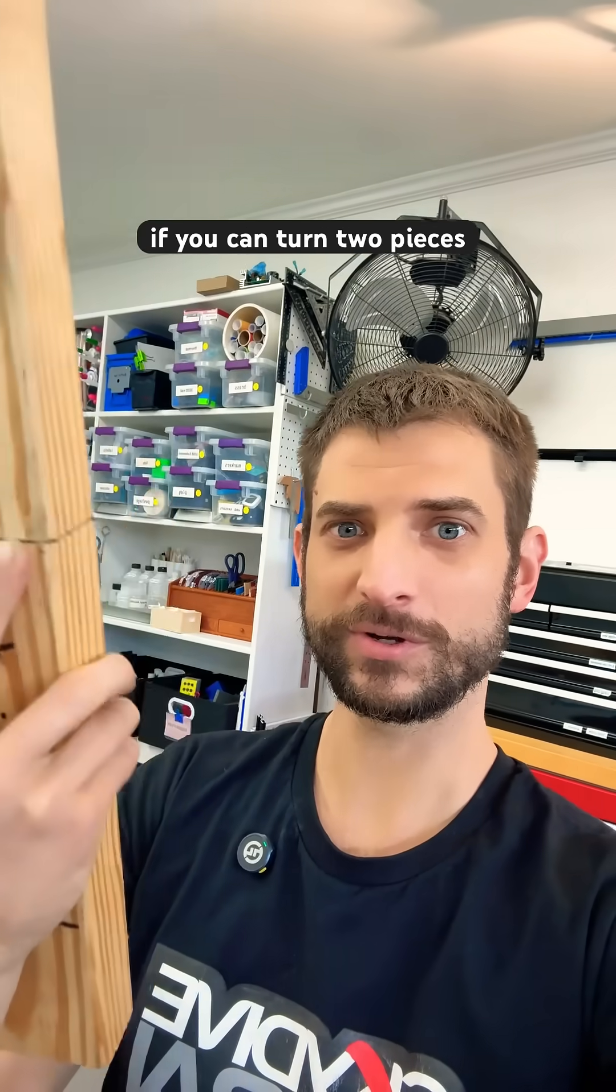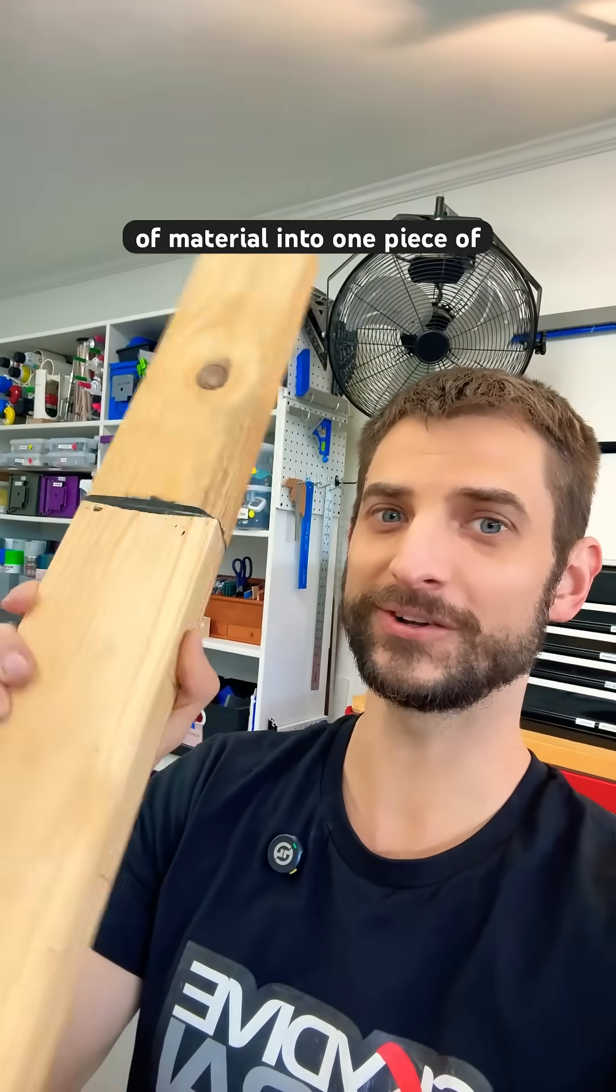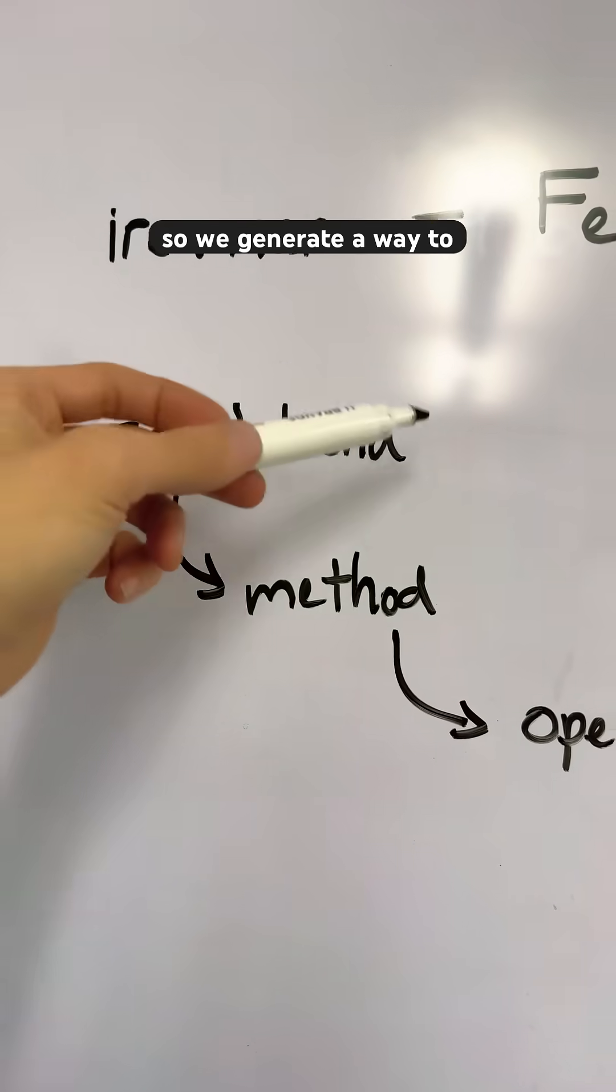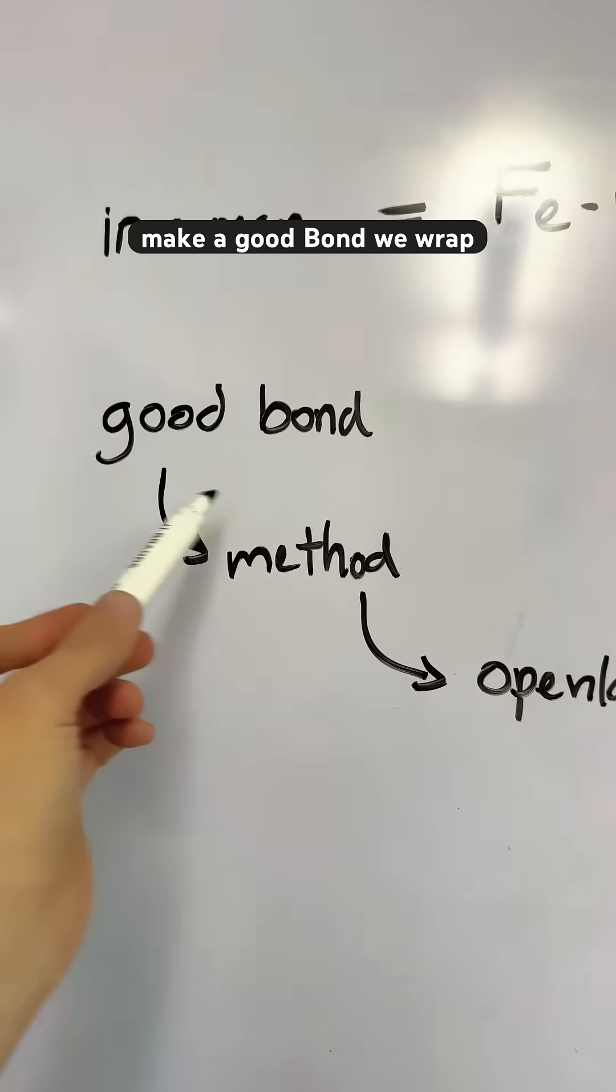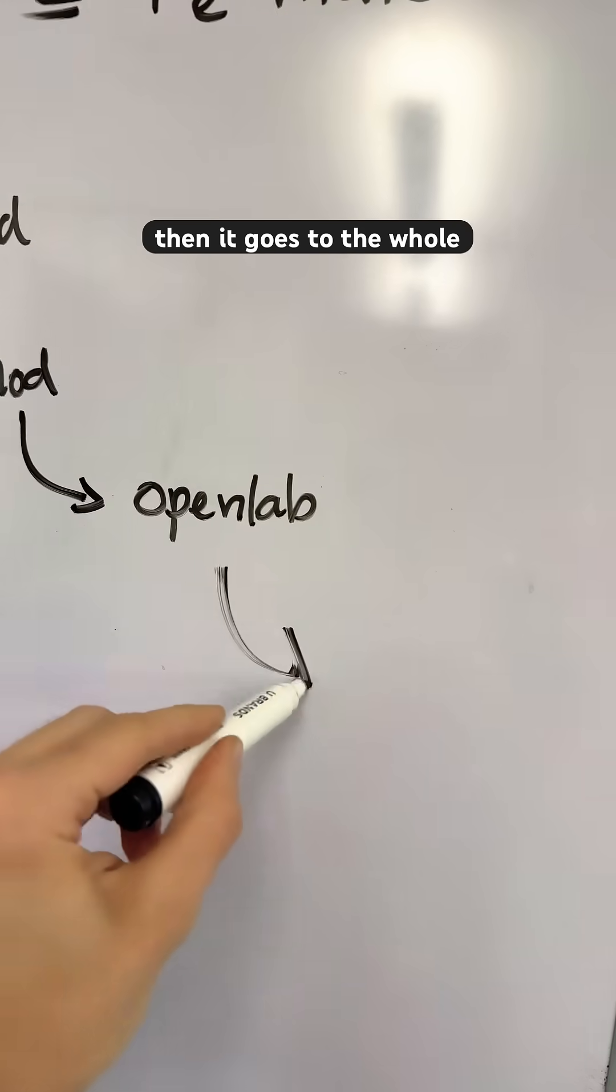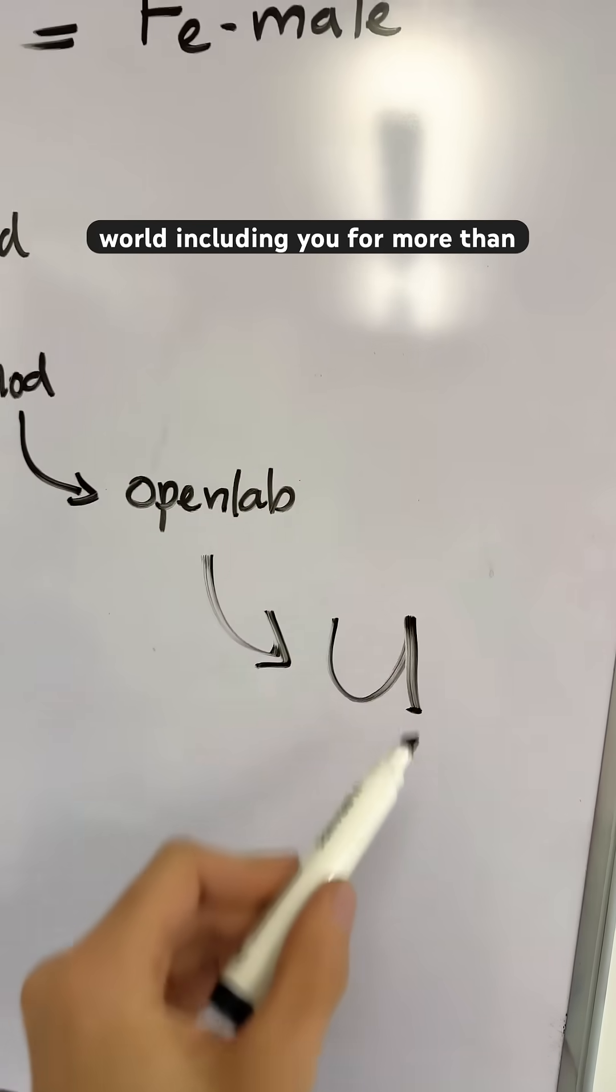Now imagine what you can do if you can turn two pieces of material into one piece of material. That's what we're getting now. So we generate a way to make a good bond, wrap that into a documented method, put that into OpenLab, and then it goes to the whole world, including you.